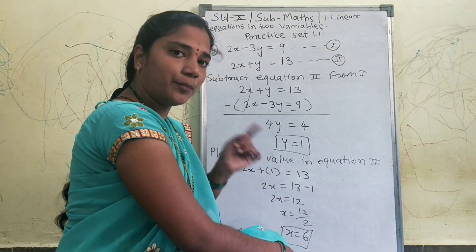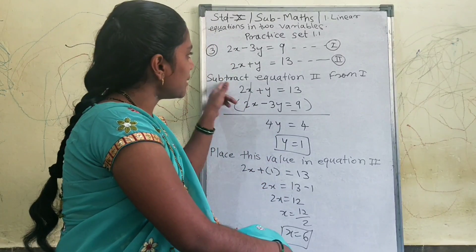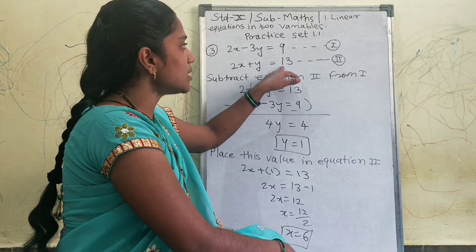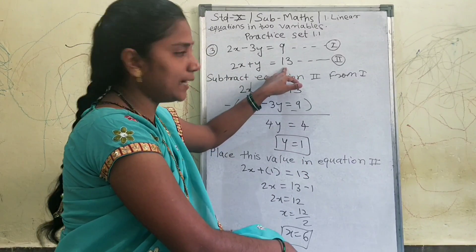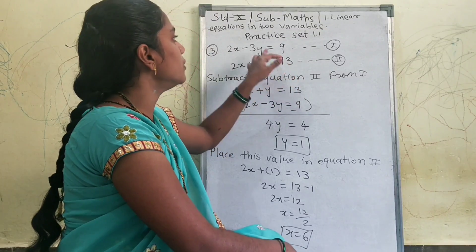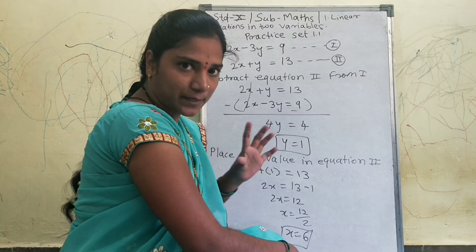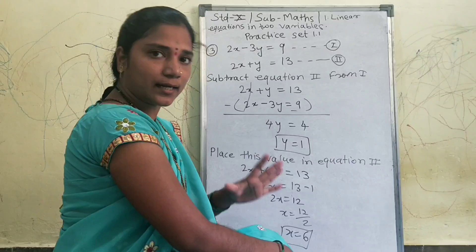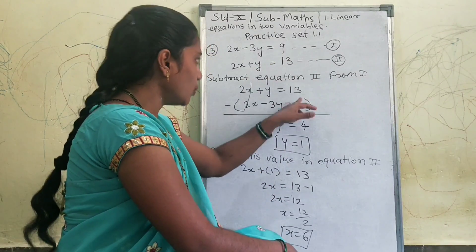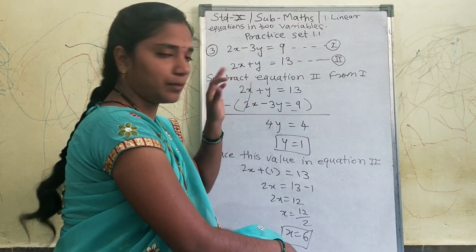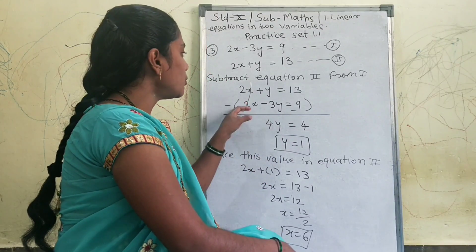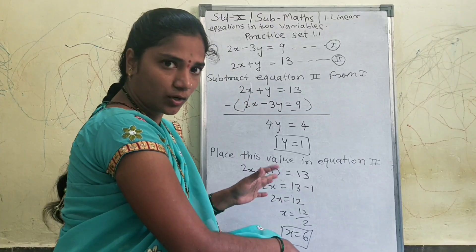Okay, so what do we do? Next step is subtract equation 2 from 1. So the main equation, I subtract equation 2 from equation 1. I subtract 2 minus 2, 0, x gets eliminated.